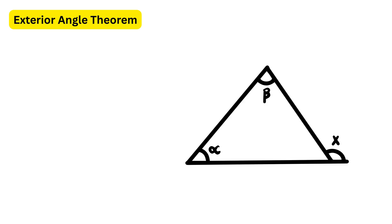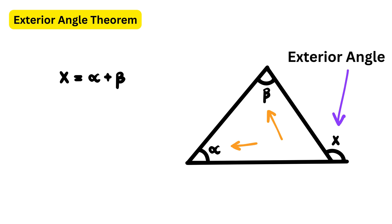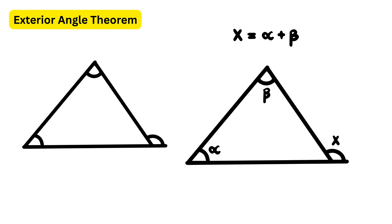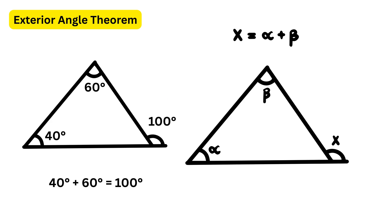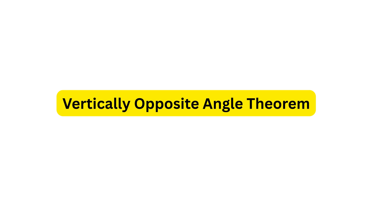Next is the exterior angle theorem. This theorem states that the measure of an exterior angle of a triangle equals the sum of the two non-adjacent interior angles. For example, if the two opposite interior angles are 40 degrees and 60 degrees, then the exterior angle will be 40 + 60 = 100 degrees.